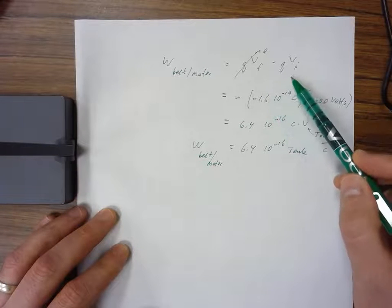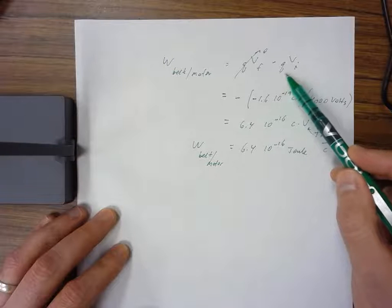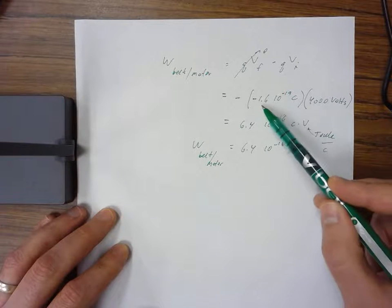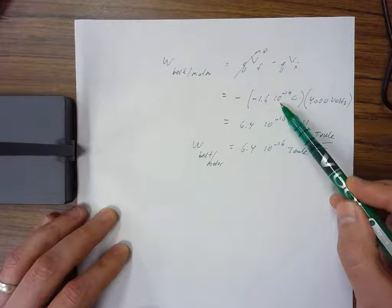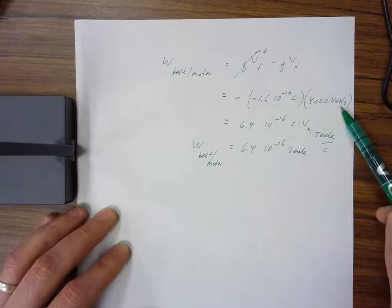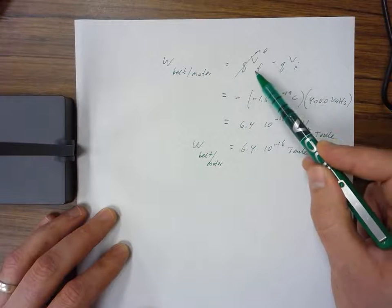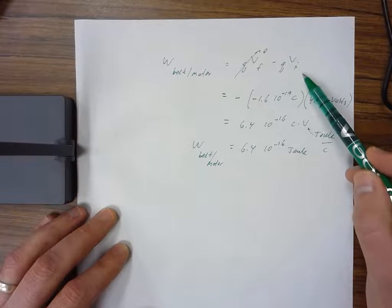The charge of an electron is negative, and it's important that when we calculate electric potential energy, there's no absolute value sign on this q. So I need to use negative 1.6 times 10 to the negative 19 coulombs. The initial voltage is 4000 volts. This negative sign comes from my change in electric potential energy formula.